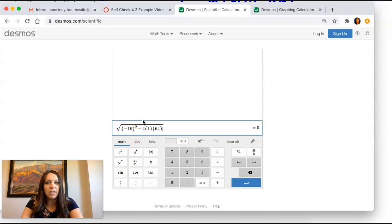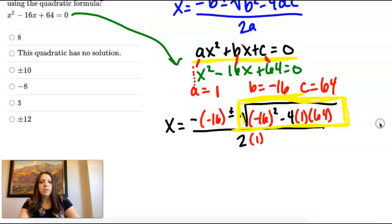So notice how I copied it in exactly like we had it written down. I didn't change anything. And I get 0.